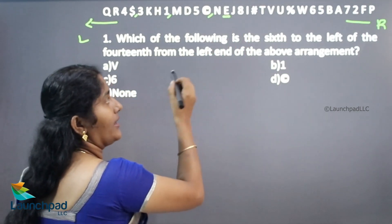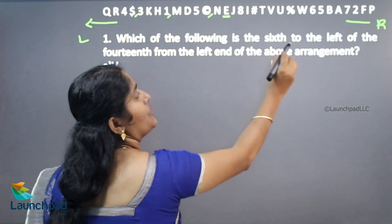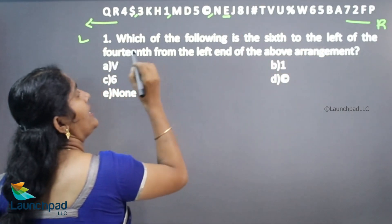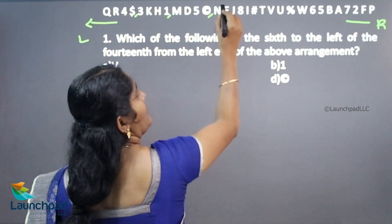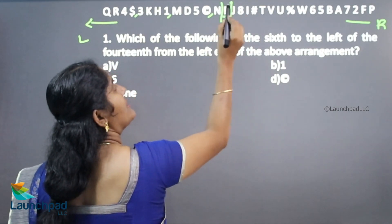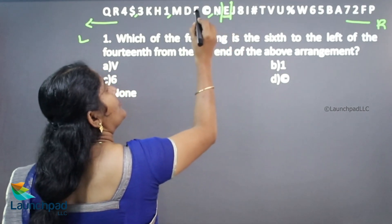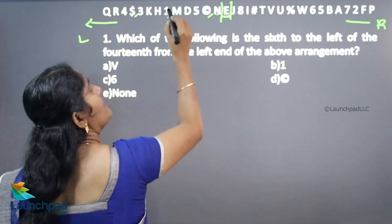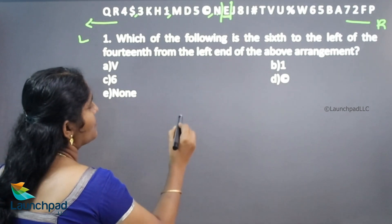Now, again we want to count 6th to the left of the 14th element. This is our 14th element. What is 6th left of this E? 1, 2, 3, 4, 5, 6. Answer is 1.